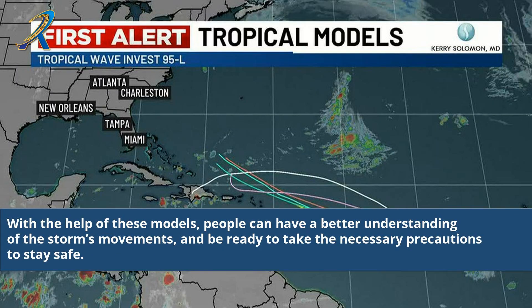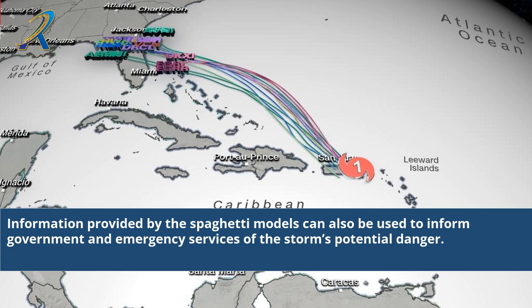With the help of these models, people can have a better understanding of the storm's movements, and be ready to take the necessary precautions to stay safe. Information provided by the spaghetti models can also be used to inform government and emergency services of the storm's potential danger.